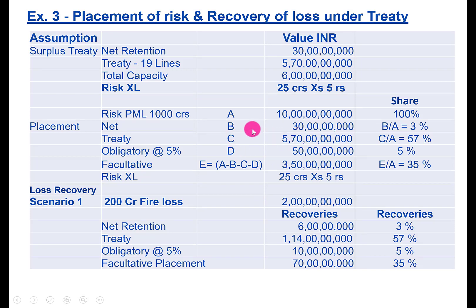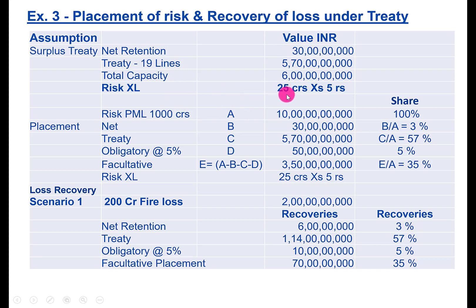Now here is another example covering placement of risk and recoveries of loss under treaty. We assume retention is 30 crores on a 19 lines treaty, so treaty capacity is 570 crores and total capacity is 600 crores. In addition, to protect the net retention of 30 crores, the company has taken a Risk XL cover of 25 crores in excess of 5 crores. The PML of the risk is assumed to be 1,000 crores, and 100 percent share is accepted.